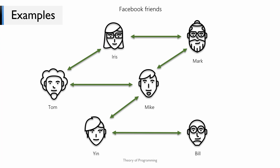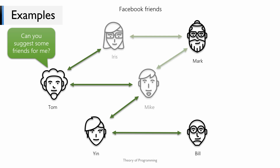So it's a bi-directional edge. Now given this graph, let's say you're asked to recommend some friends to Tom. Iris and Mike are already friends of Tom, so we can't recommend them. The next best people for recommendation would be the friends of Iris and Mike, so we can recommend Mark or Yin as friends for Tom. Mark would have a higher preference since there are two mutual friends. Algorithmically, all we did was recommend those people who are two edges away from Tom and rank them by the number of common adjacent vertices.